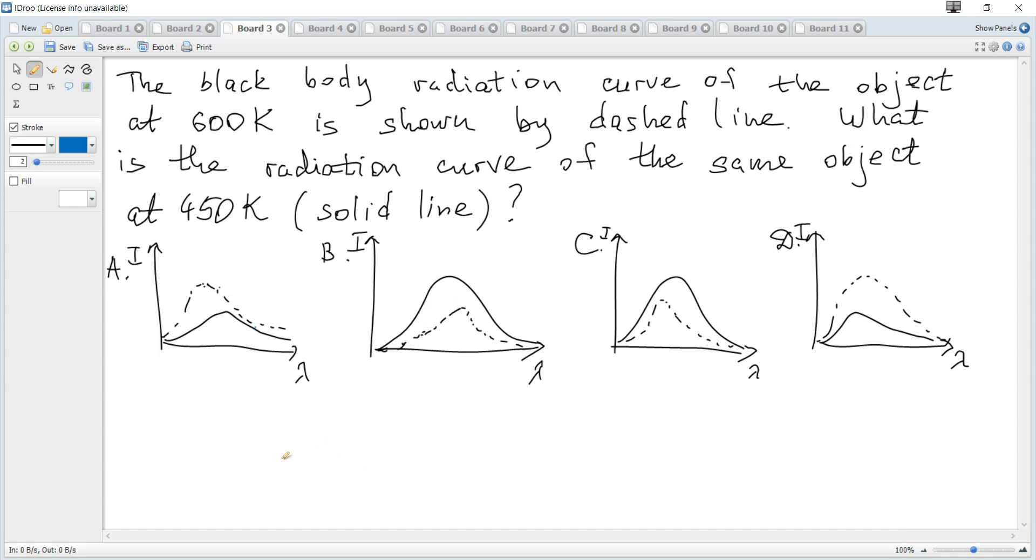Let's review the formulas. Luminosity, which is power or energy per second, equals some constant times surface area of the black body. If it's a sphere, it equals 4πr² times temperature to the power of 4.